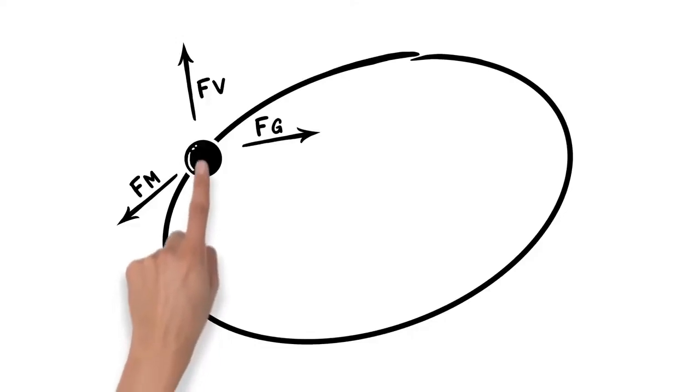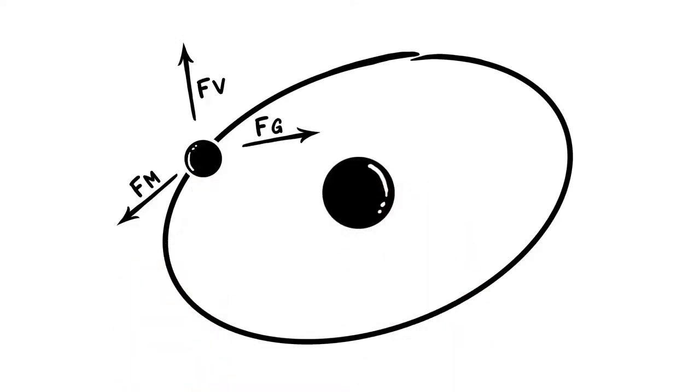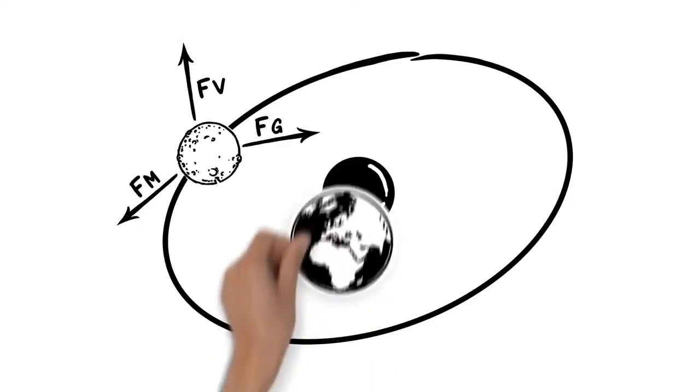If a celestial body revolves around another, we call this movement an orbit, like our moon, which orbits the Earth.